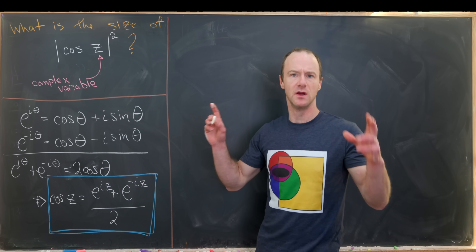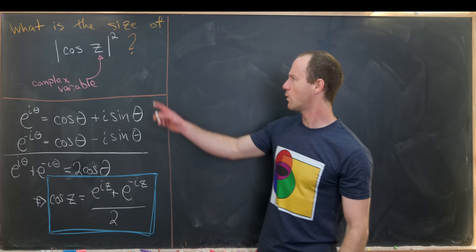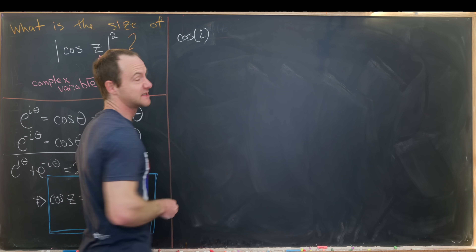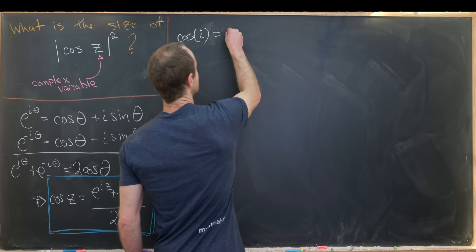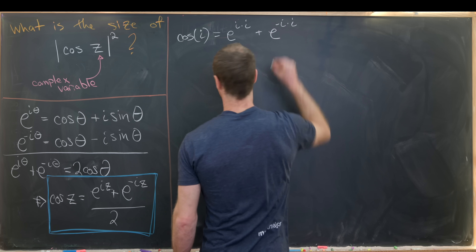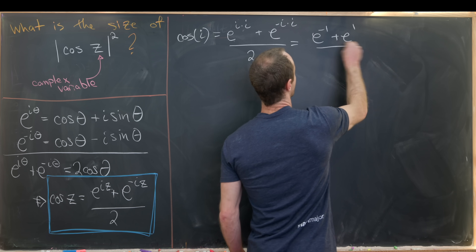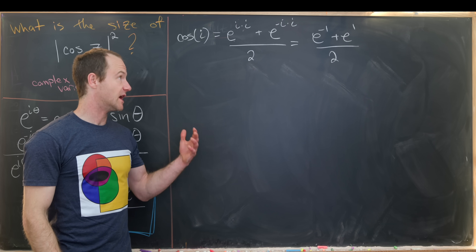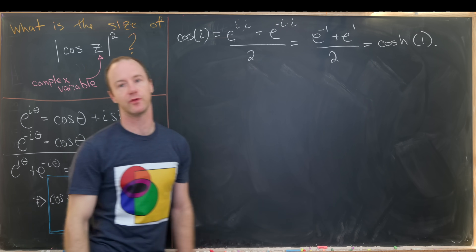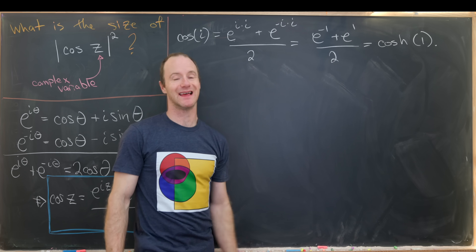This is our representation of cosine evaluated at a complex variable. Let's find cosine of i. That equals e to the i times i plus e to the minus i times i, all over 2 — which is e to the −1 plus e to the 1, over 2, because i times i is −1. This is exactly the hyperbolic cosine evaluated at 1, giving a nice relationship between the regular trigonometric functions and the hyperbolic trigonometric functions.